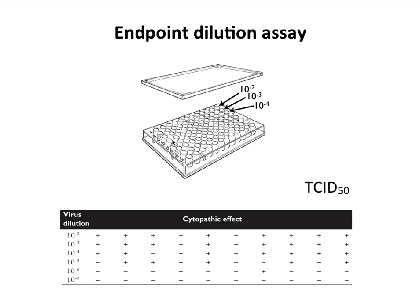Some viruses do not kill cells or don't form plaques, so we need other ways to measure their infectivity. One approach is the endpoint dilution assay. Cells are infected with different dilutions of virus—here from 10⁻² to 10⁻⁷. Small wells in a 96-well plate each contain a monolayer of cells; each row receives a separate dilution in multiple replicate wells. For example, all wells in row A contain the 10⁻² dilution, all wells in row B contain the 10⁻³ dilution, and so forth.